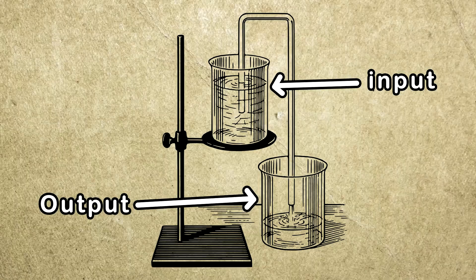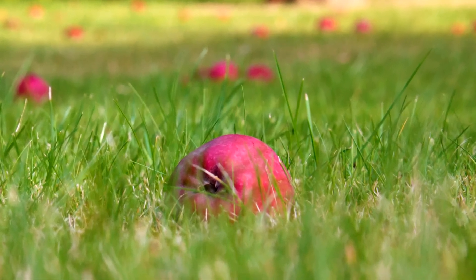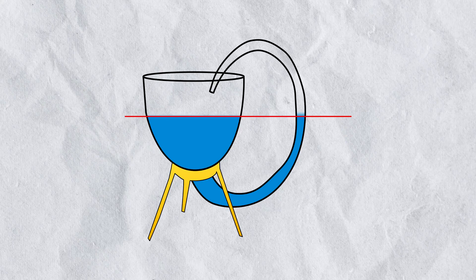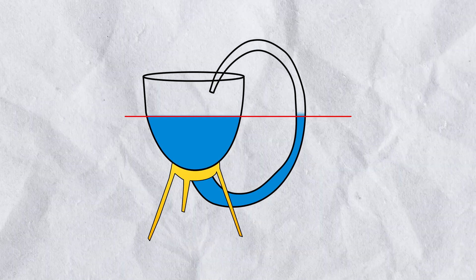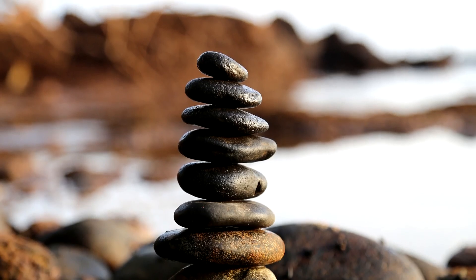Because the siphon requires its output to be lower than the input, since the whole operation relies on gravity. In this case, the water in the tube will stop at the same level as the water in the flask. That is where it reaches equilibrium.